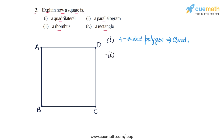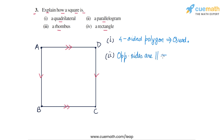In part 2, we have to explain why a square should be a parallelogram. In any square, opposite sides are parallel. So AB will be parallel to DC, and AD will be parallel to BC. Since opposite sides are parallel, the square must also be a parallelogram.